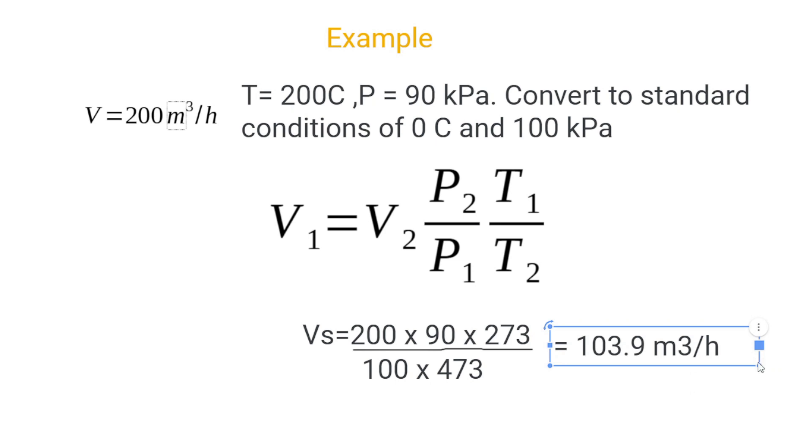And let's just stop for a second to think about this answer. So what we calculated, we calculated the conditions at a lower temperature and a slightly higher pressure. Now with a gas, as we know from the ideal gas law, if the pressure is increasing, the volume should be decreasing. And if the temperature is decreasing, so should the volume. In this case, both the temperature has decreased and the pressure has increased. Therefore, the volume should have decreased. And that is exactly what we are seeing over here. The standard volume is lower than our measured volume.